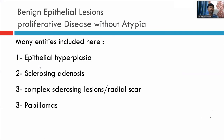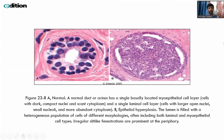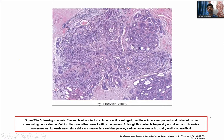Proliferative disease without atypia includes epithelial hyperplasia, sclerosing adenosis, complex sclerosing lesions including radial scar, and papillomas. The normal duct has bilayered epithelium with intact myoepithelial cells. In epithelial hyperplasia the duct shows proliferation of epithelial cells forming multiple slit-like spaces — this can be usual ductal hyperplasia or atypical ductal hyperplasia depending on the degree of cytological atypia. Sclerosing adenosis can almost look like invasive ductal carcinoma, but the ducts all have myoepithelial cells, and the sclerosis between them gives the false appearance of desmoplastic stroma.